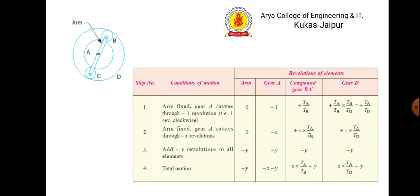Now construct the table. For the first row: arm is fixed, gear a (the sun gear) rotates through minus one revolution (clockwise). So: arm = 0, gear a = minus 1, compound gear bc = plus ta by tb, gear d = plus ta by td. For the second row multiply by x. For the third row, since we took minus one in row one, add minus y to all elements. The fourth row gives the total motion.